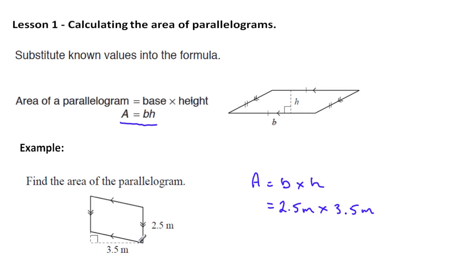So our solution here would be 2.5 meters times 3.5 meters, which is 8.75 meters squared. Remember, the units for area are square units.